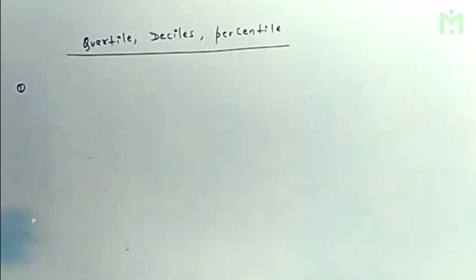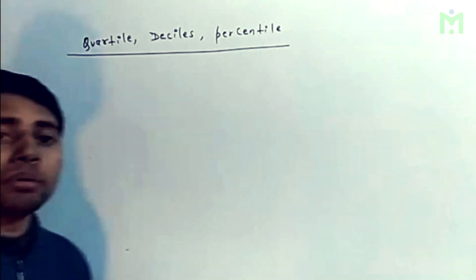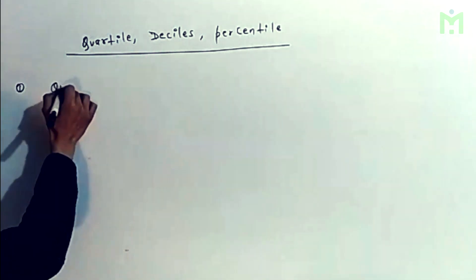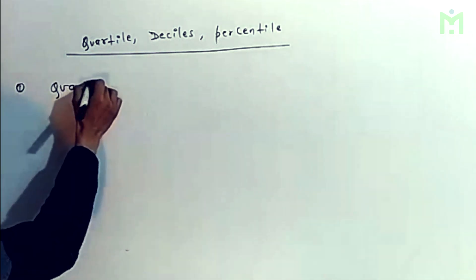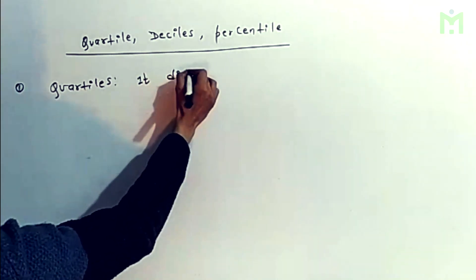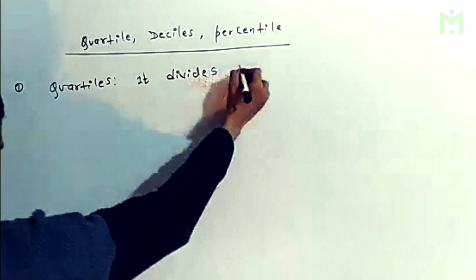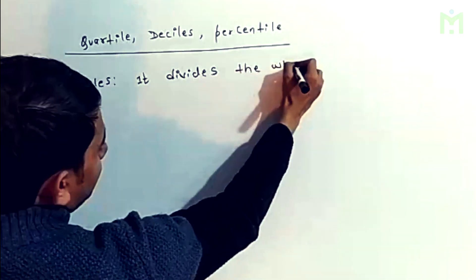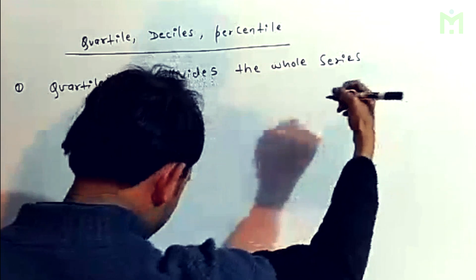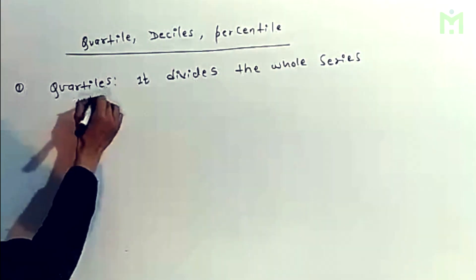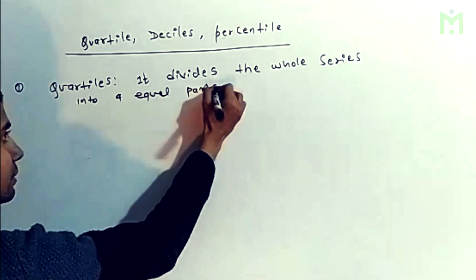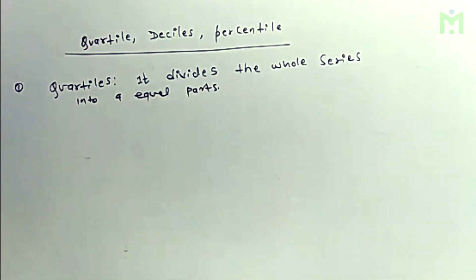Quartiles. There are also percentiles. So if you want to make a measure of percentiles, then you want to make quartiles. Quartiles each divide a whole series into 4 equal parts. 4 equal parts.